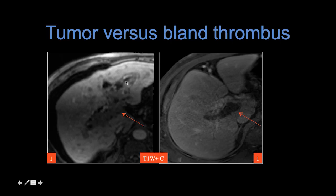Remember the differences between bland thrombus and tumor in vein — the very different look with the threads-and-streaks appearance. It's a very important diagnosis to make, and very important that we are highly specific when we make the diagnosis of tumor in vein.